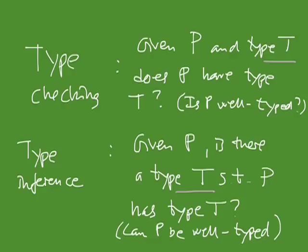There are languages — most notably functional programming languages such as Haskell and languages from the ML family — that have type inference as a central aspect. I'll return to that later. But first, I'll talk about the simply typed lambda calculus. Here it is.